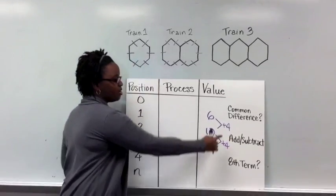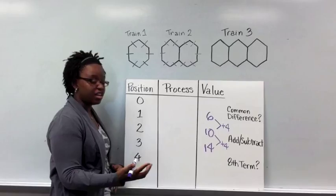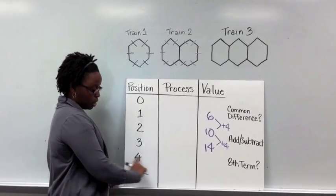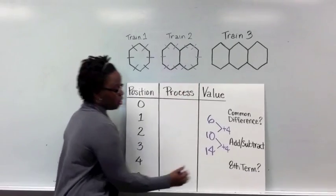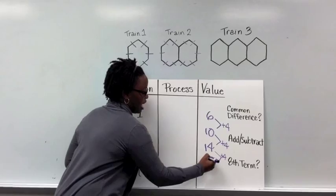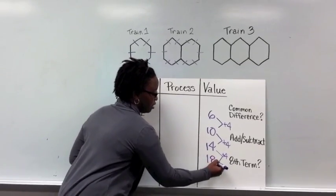Every single time, we're adding 4 to the value. And because you know this pattern is going to continue on adding 4, you can even figure out the perimeter of train 4 even though we don't have it drawn here. We know it's just going to add 4 and we would have a value of 18.